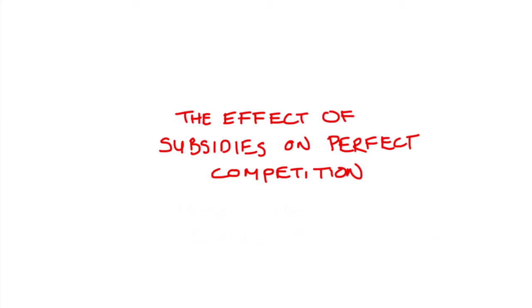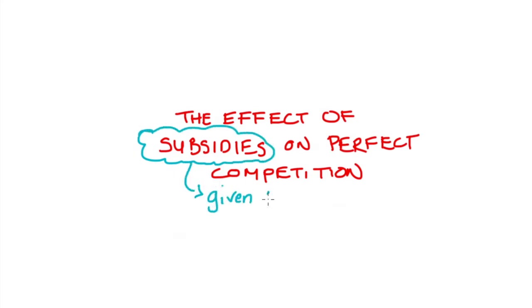Hi everyone. In this video I'm going to be looking at what happens when we give the consumers in a perfectly competitive market a subsidy. I'm going to have a look at market outcomes — price and quantity — and also welfare: producer surplus, consumer surplus, deadweight loss, and anything with government.